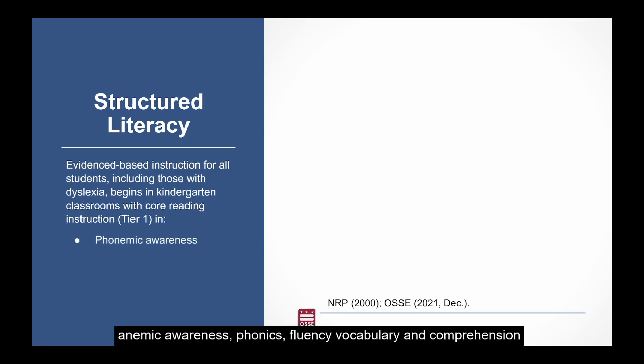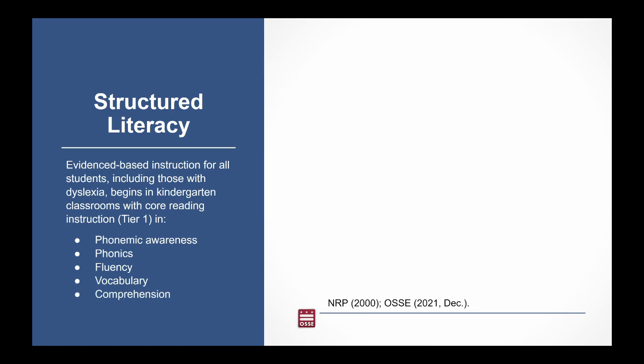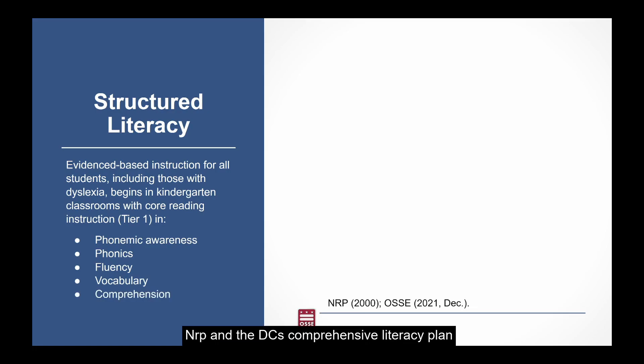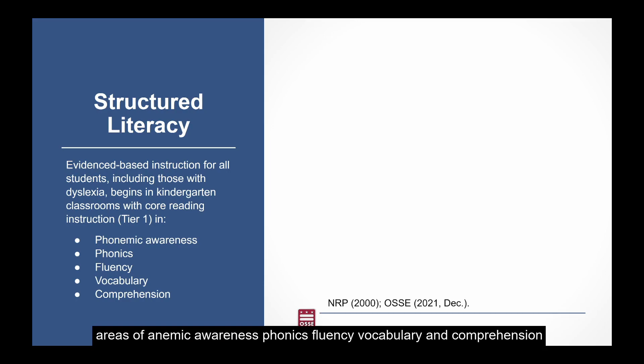The five components of reading are: phonemic awareness, phonics, fluency, vocabulary, and comprehension, as identified by the National Reading Panel and D.C.'s Comprehensive Literacy Plan. Structured Literacy supports these five core reading instructional areas of phonemic awareness, phonics, fluency, vocabulary, and comprehension.